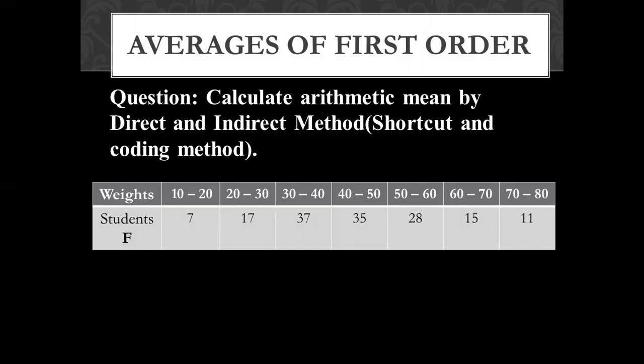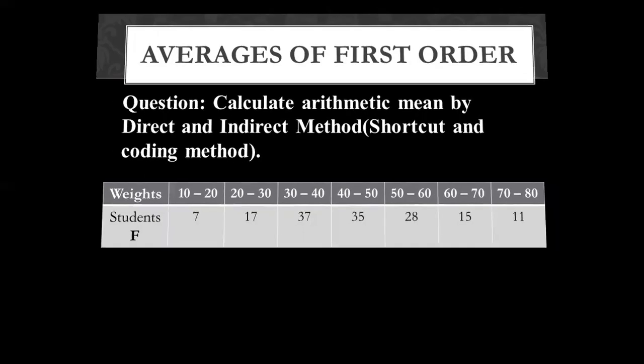We have given weights. We have given classes in the weights. These are class boundaries, because where the class ends, the next class starts. This is the class boundaries. We also have the number of students.